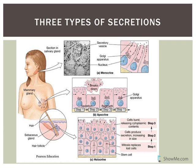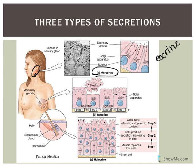The first mode is merocrine secretion. The secretory product is released from the cell while the cell remains intact — it is the least damaging, with no loss of the glandular cell at all. Salivary glands, such as the parotid salivary gland shown here, are an example, as are eccrine sweat glands, which help cool you down.